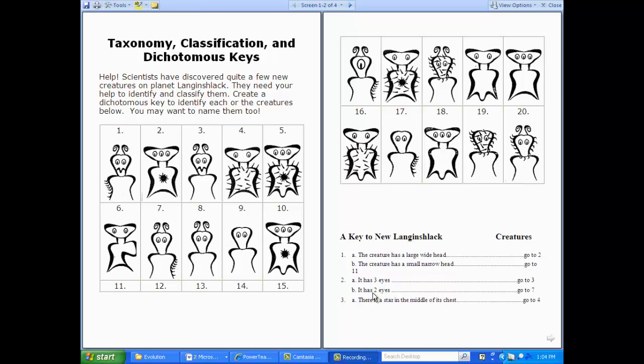So, let's look at number one here. What we need to do is, when you are making these, you're able to separate them into groups, and then into smaller groups and smaller groups based on structural characteristics. If we're looking at number one here, we're obviously always going to start at number one on the dichotomous key. So, the creature has a large, wide head, or the creature has a small, narrow head. Where are we going to go? Are we going to go to two, or are we going to go to 11?